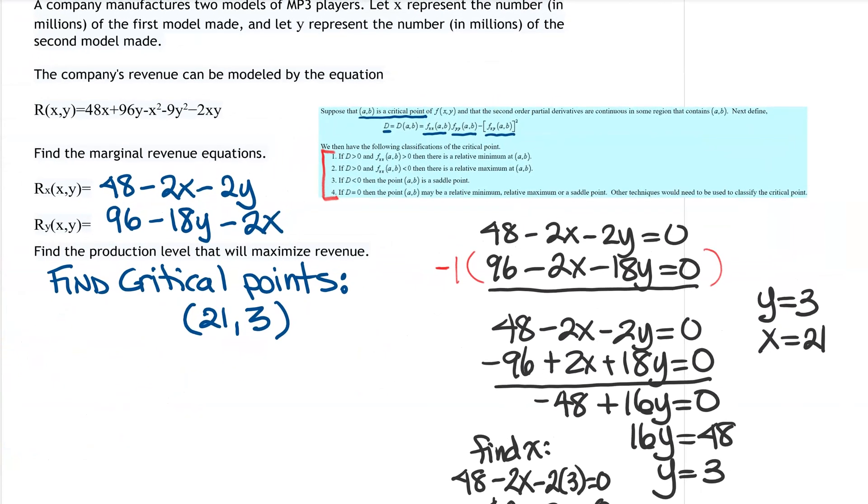Okay, so back to our second derivative. So our second derivative with respect to x, and our second derivative with respect to y, and our mixed partial second derivative. Okay, so if you find these, this one's negative 2, negative 18, and negative 2.